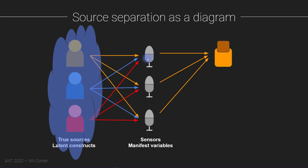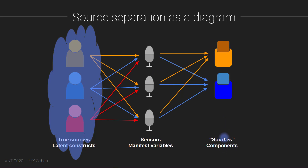Rather than doing all of our statistical analyses on each individual microphone or sensor separately, we instead try to combine them to obtain something called a component — a sort of estimate of a source. If we make the correct assumptions about the sources and how they mix, then we can define these weights in a particular way that gives us confidence that these components are a good representation of the underlying latent constructs, the true original sources. So these components are the things we analyze instead of individual manifest variables.